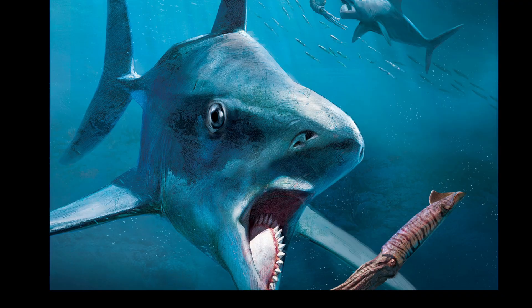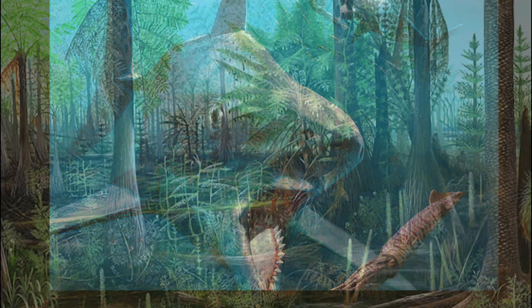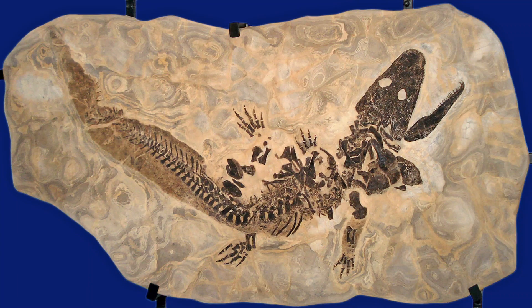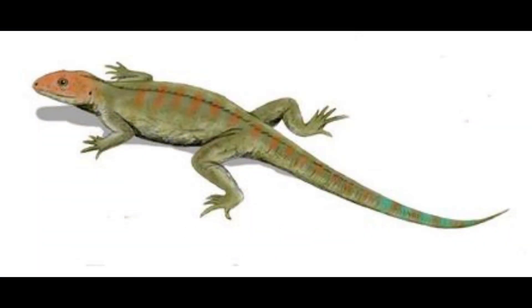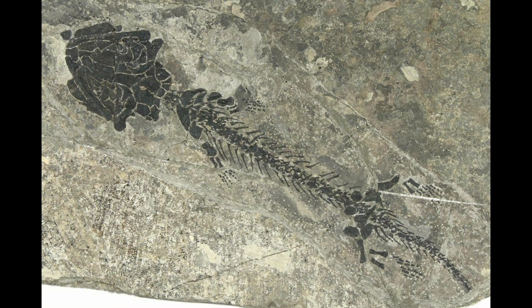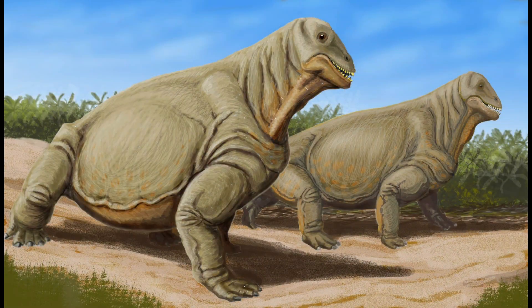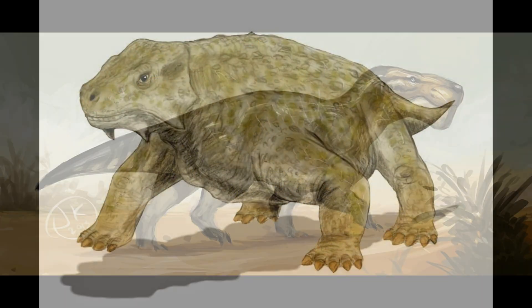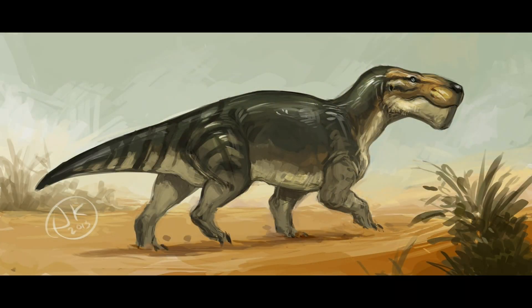Between the end of the Devonian and the end of the Permian, a lot happened. Sharks became the dominant predator in the oceans, trees evolved, amphibians evolved, and ammonites took over from the arthropods and the amphibians. But at the end of the Permian, synapsids — the ancestors of mammals — ruled the land. Reptiles were important but were taking a backseat to creatures like the Gorgonopsids.